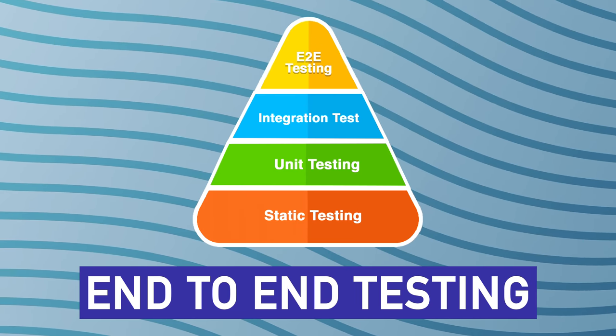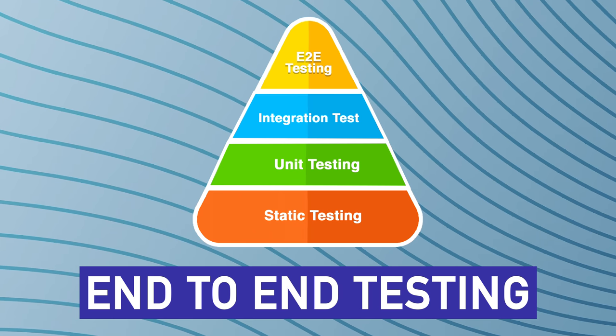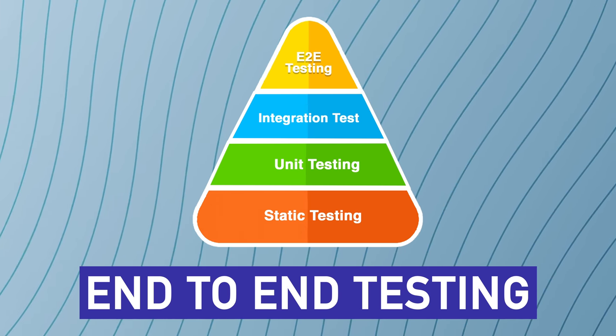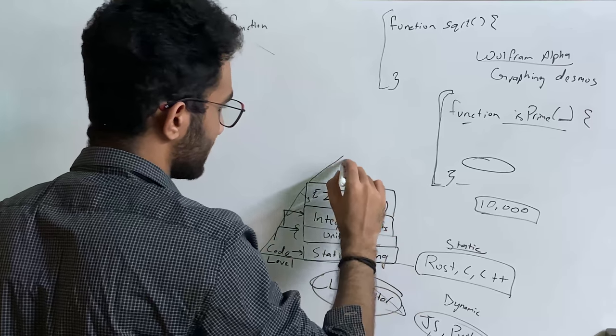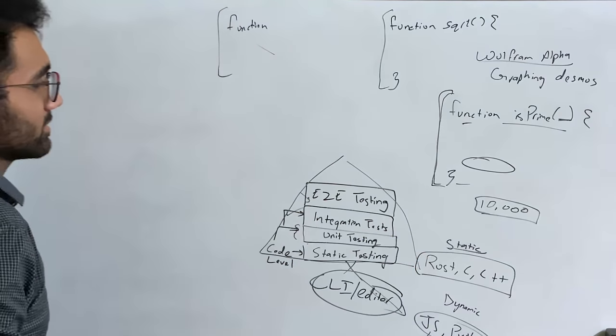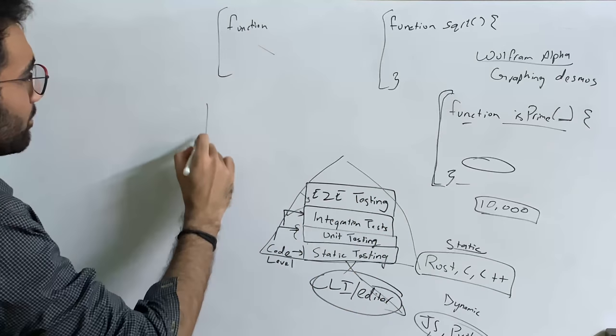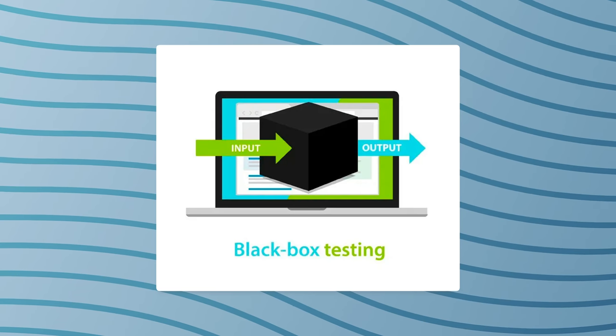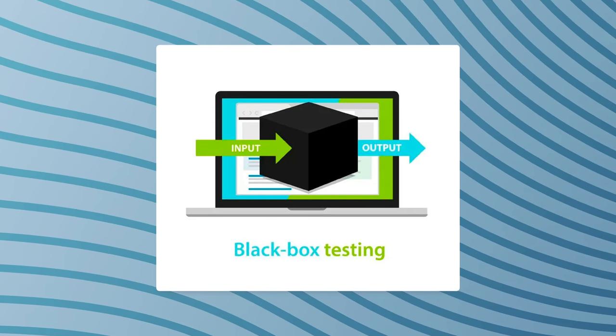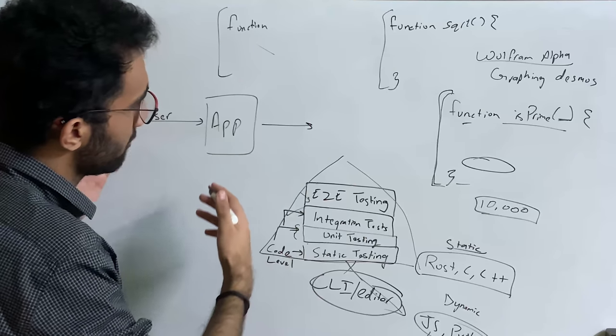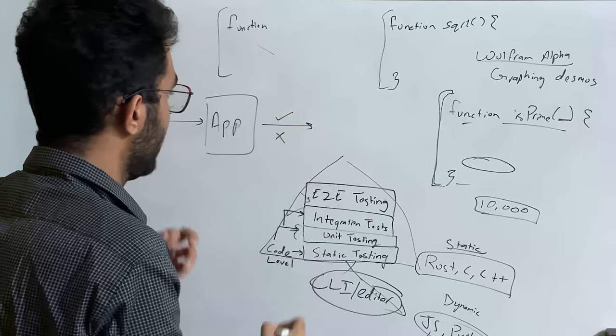The final form of testing which is available is called end-to-end testing. This end-to-end testing, also known as E2E, pretty much closes our pyramid of testing, which obviously looks like a stack instead of a pyramid. This end-to-end testing means that you consider your whole application as a black box. This is your app and you just try to simulate a user's behavior and try to see if the behavior is, for a given behavior, if the output is correct or not.